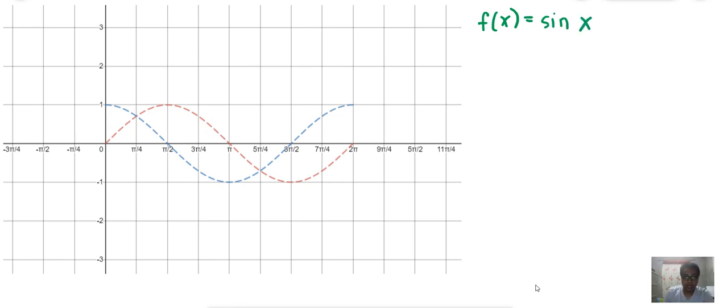The period is 2π, from 0 to 2π. Ang ibig sabihin niyan, one complete cycle is from 0 to 2π. So the period is 2π.